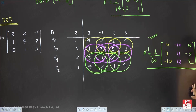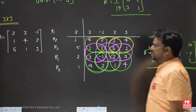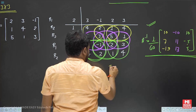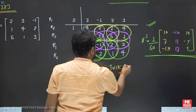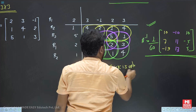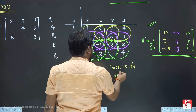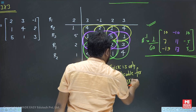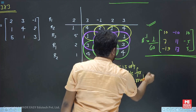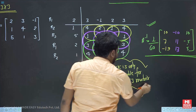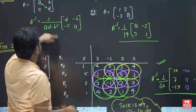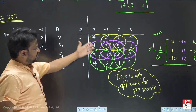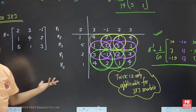This is the best trick to find A inverse. But keep in mind: this trick is only applicable for a 3×3 matrix. For 2×2, use the direct method: one over (AD minus BC), swap the diagonal elements, and change the sign of the remaining elements. For 3×3, use this column-extension trick to find the inverse.